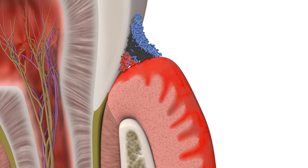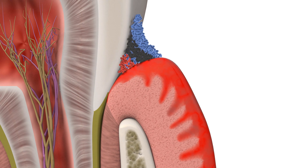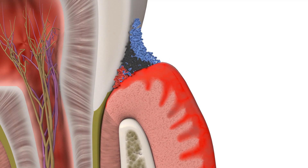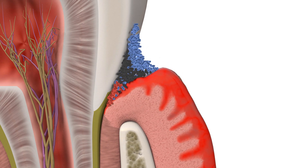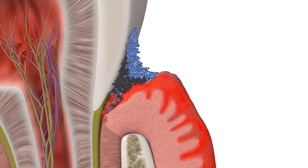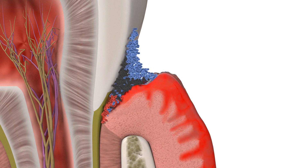This causes chronic inflammation. The deeper the tissue destruction extends, and the deeper the pocket becomes around the tooth, the more difficult it is for the bacteria to be removed. Without professional dental intervention,